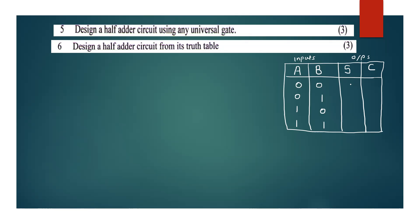There are binary additions. If both inputs are 0, the sum is 0. If one input is 1, the sum is 1. If both inputs are 1, the sum value is 0 with a carry of 1. So the truth table has sum and carry columns.